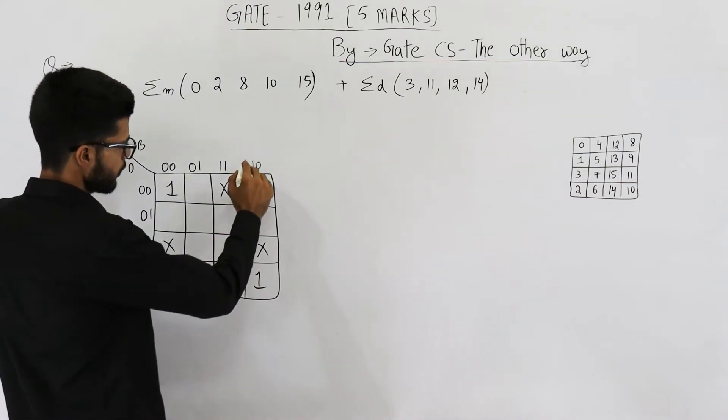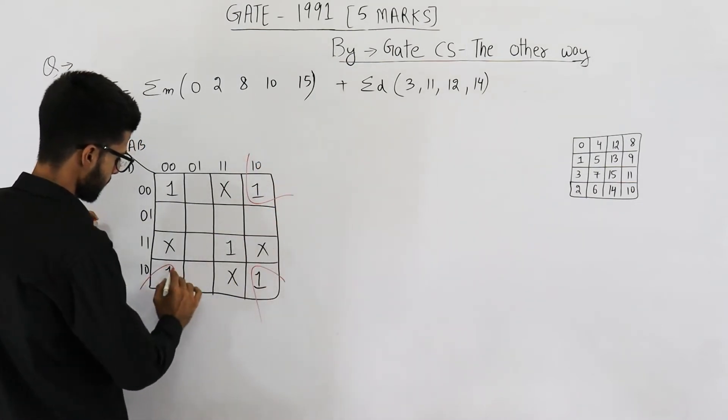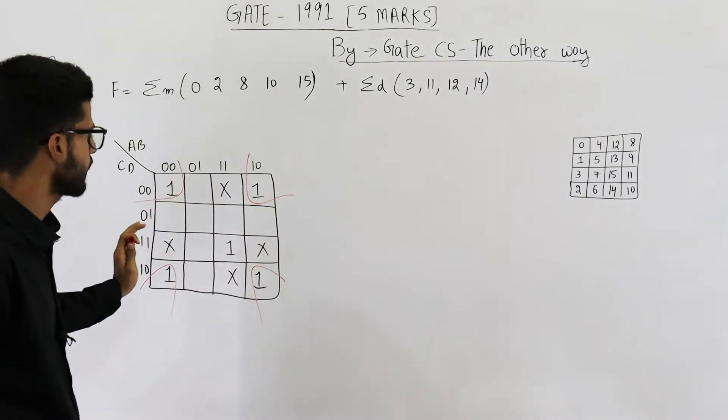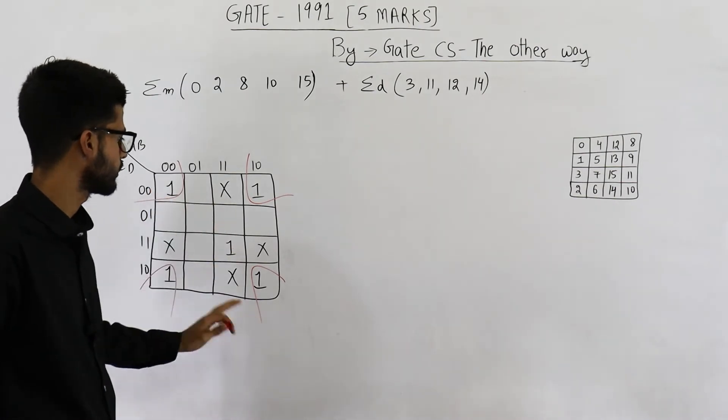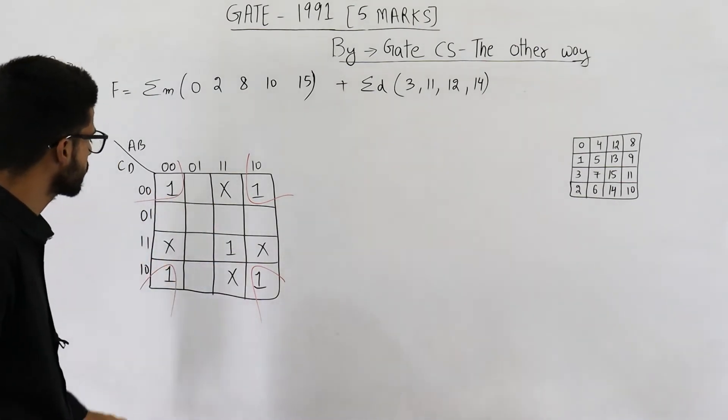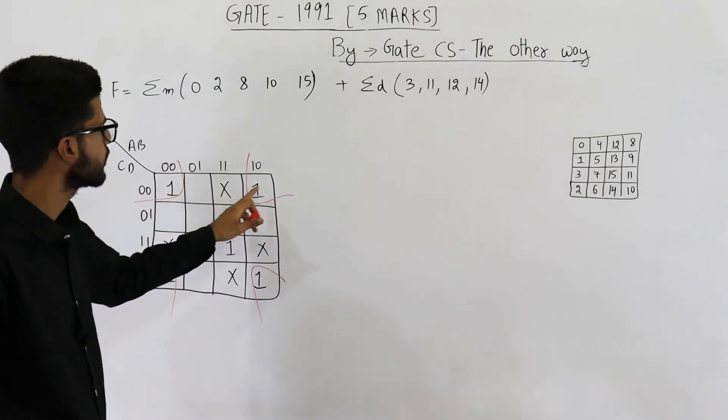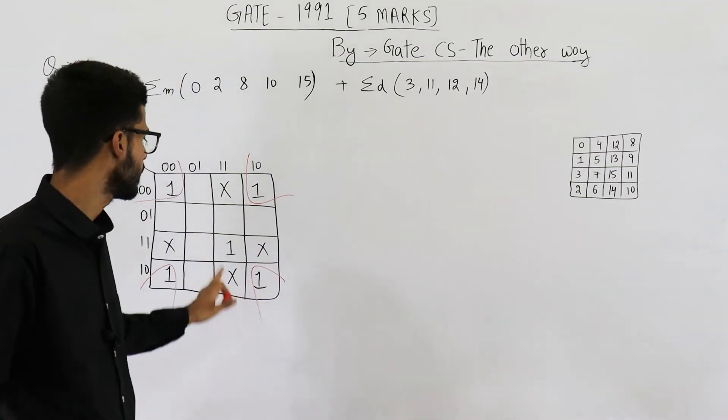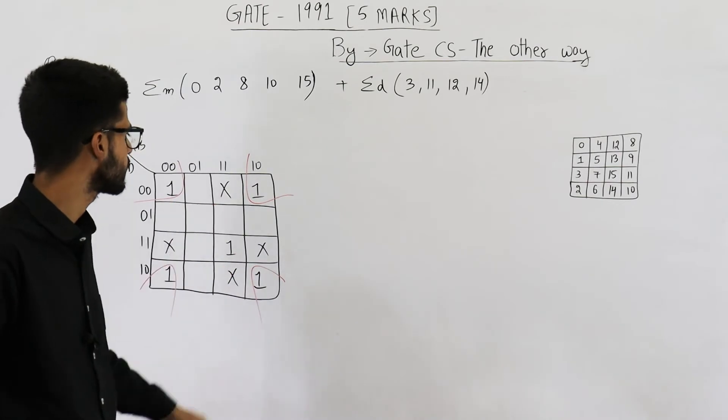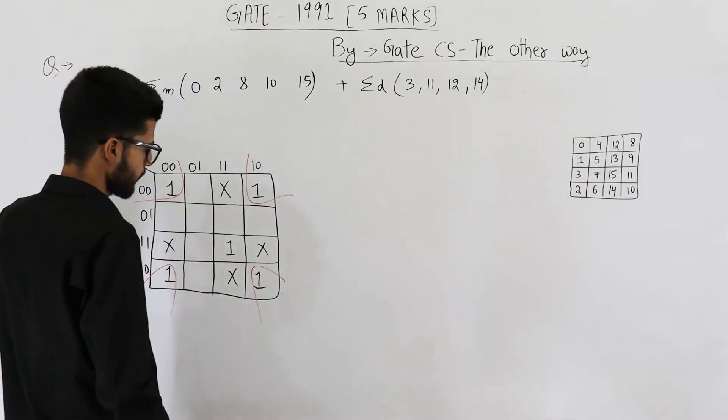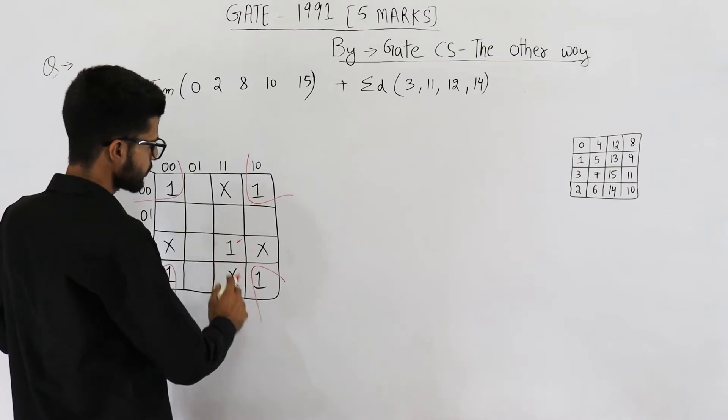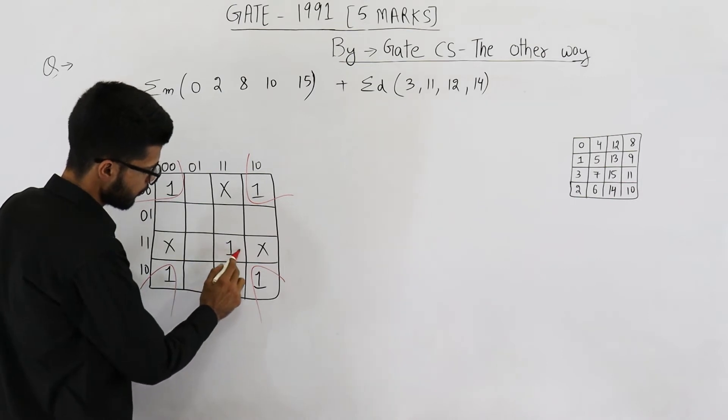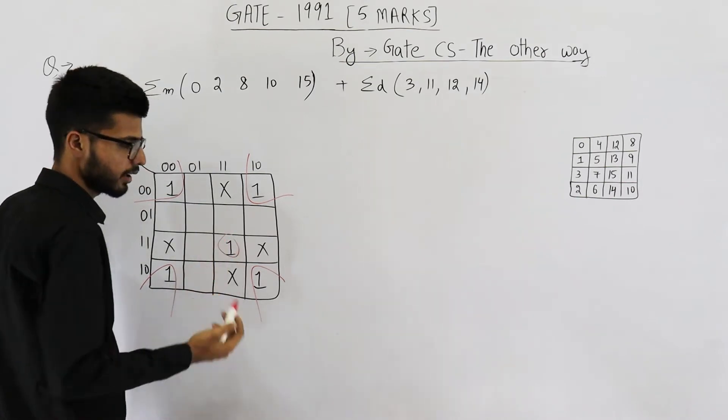So first group will be this one. How can I say that this one will be considered? It's because we are including four ones. This is the biggest possible group in this case. And you need not include any of the don't cares in this group. Now only this column is left.